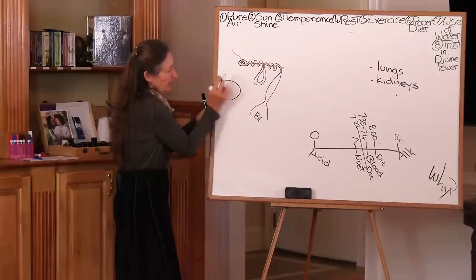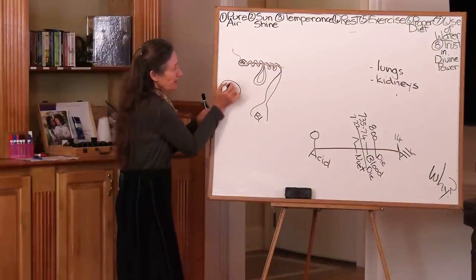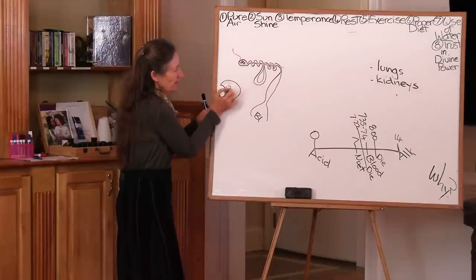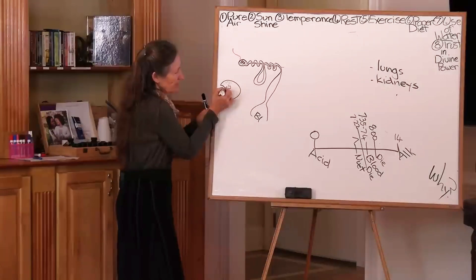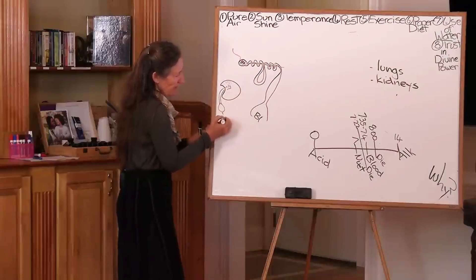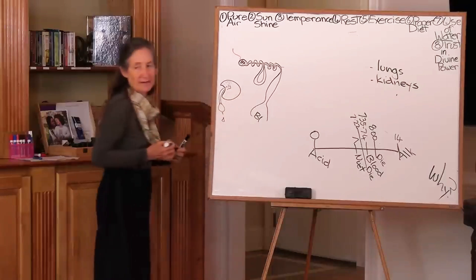So the medulla is the middle part, the cortex is the outside, and all the little filtering units basically sit on the outside. Then the tubules weave down like this, into the ureter, into the bladder, and out via the urethra comes the urine.